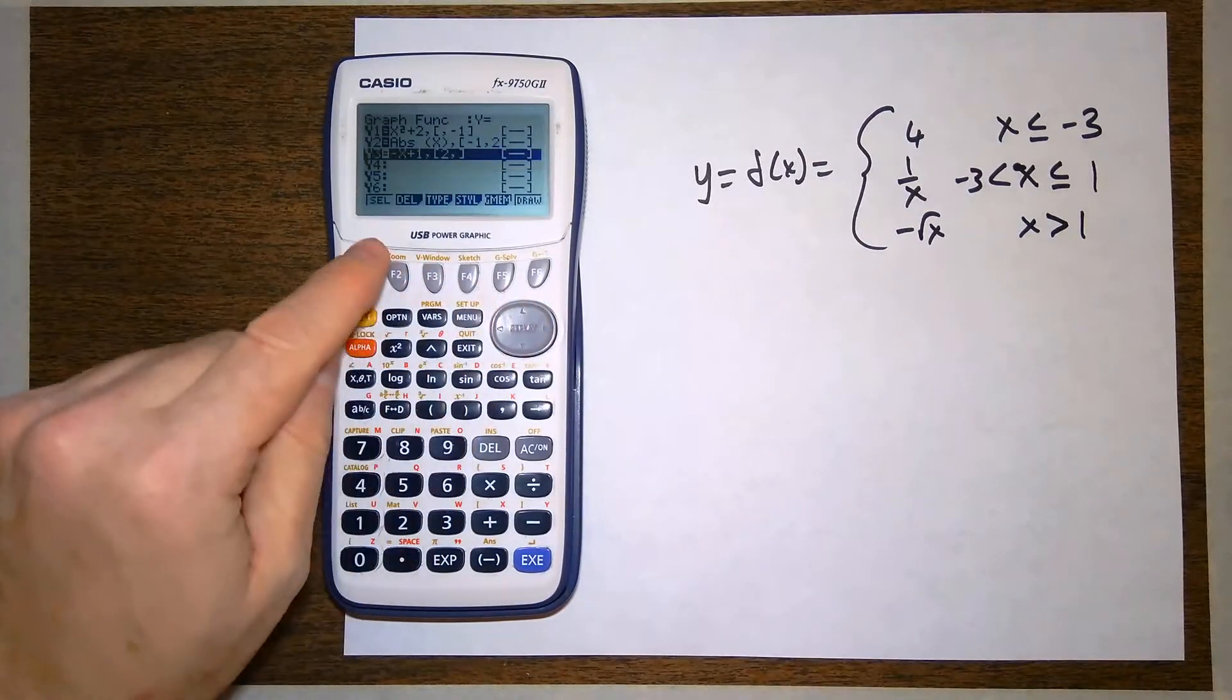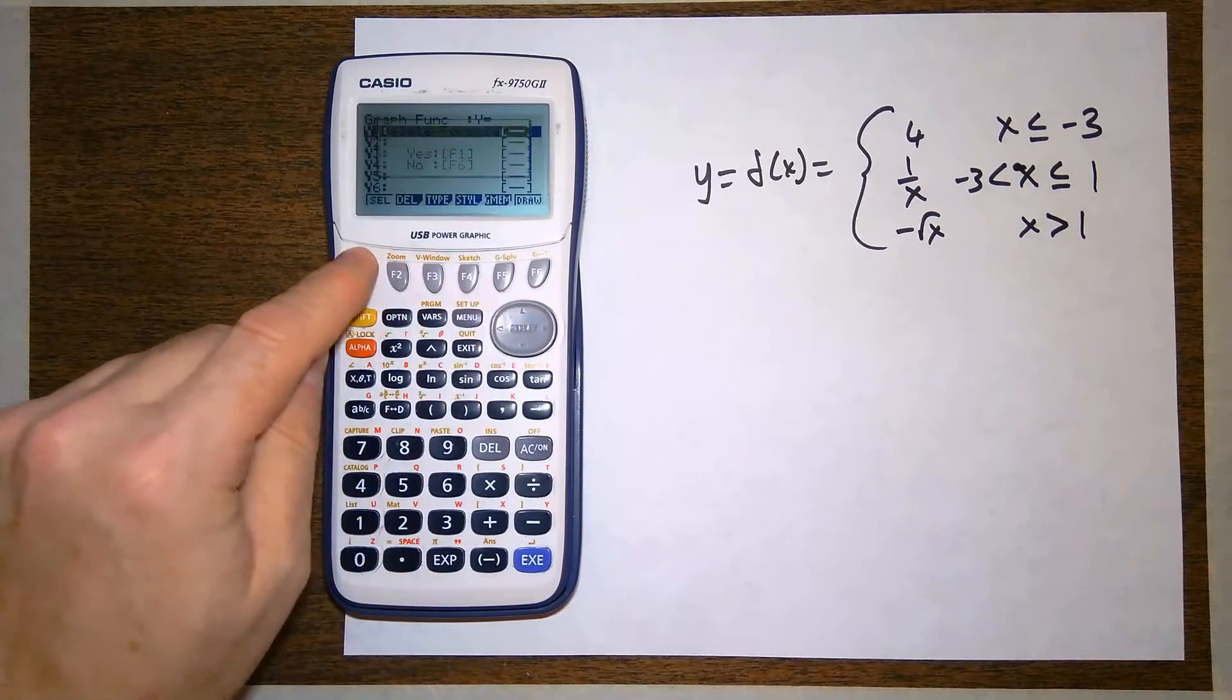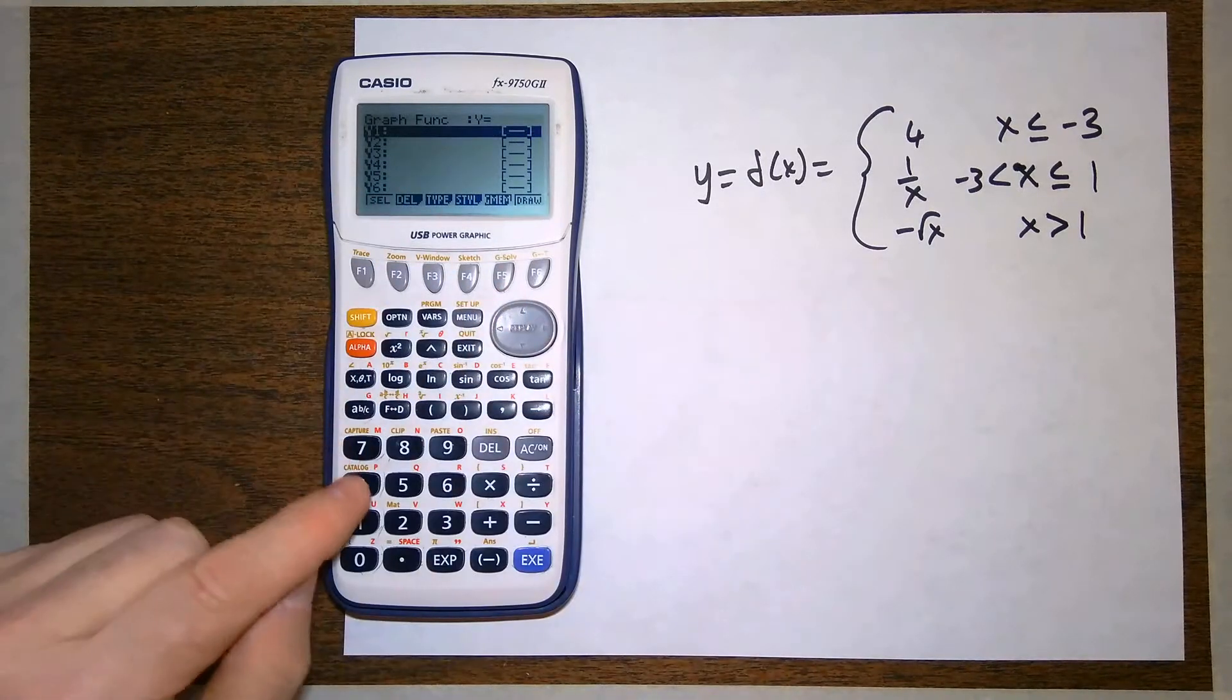Alright, on the calculator, I'm going to delete the previous lines. We'll start from scratch here, deleting everything out. I'm going to put in the line constant 4,